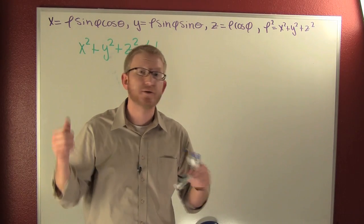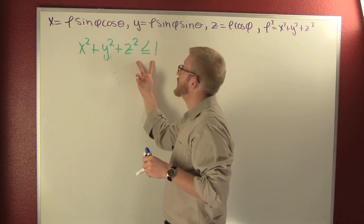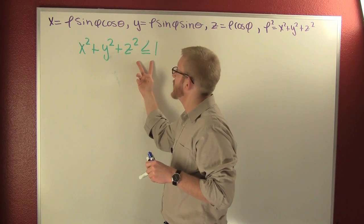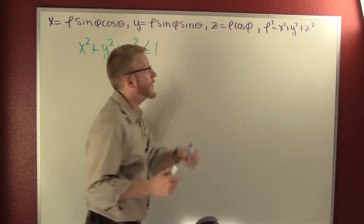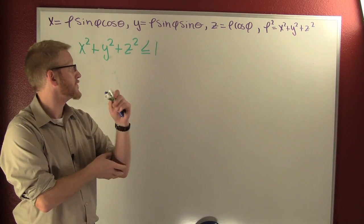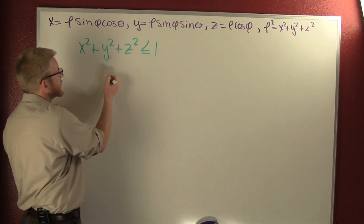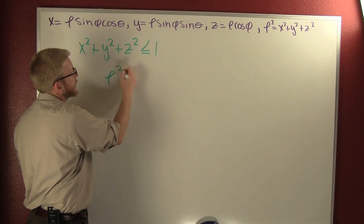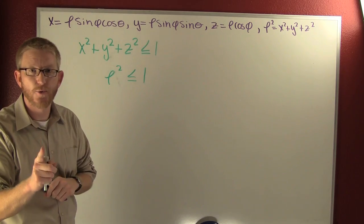So what this problem is asking us to do is describe this inequality in spherical coordinates. We know ρ² is x² + y² + z², so we can say ρ² is smaller than or equal to 1.